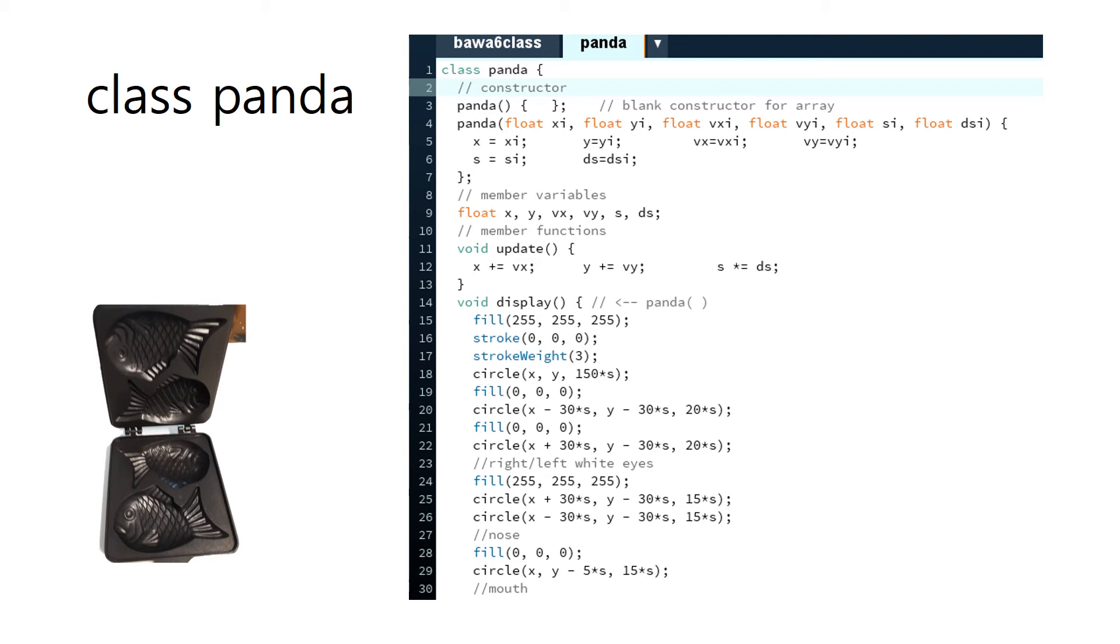The class Panda is divided into three parts: constructor, member variables, and member functions. Constructor is a function that determines initial values when an object of a class is first created. The constructor function name, Panda, is the same as the class name.